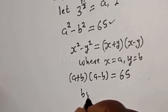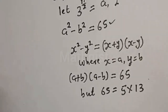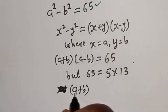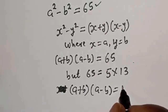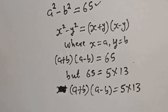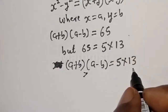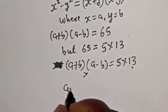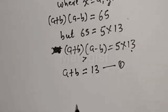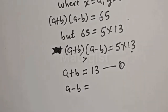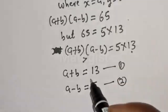So A plus B multiplied by A minus B equals 65. For an integer solution, we factor 65 as 5 times 13. Since A plus B is greater than A minus B, and 13 is greater than 5, we set A plus B equal to 13 (equation 1) and A minus B equal to 5 (equation 2), where A and B are positive integers.